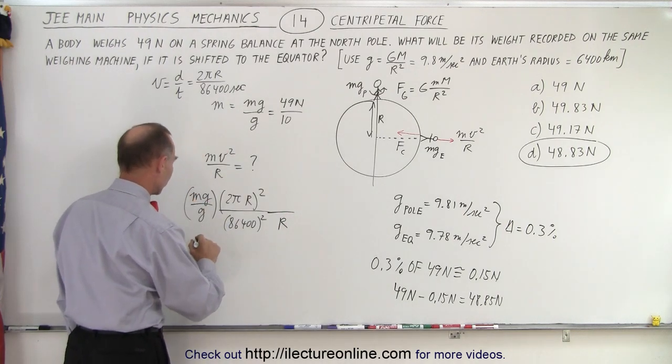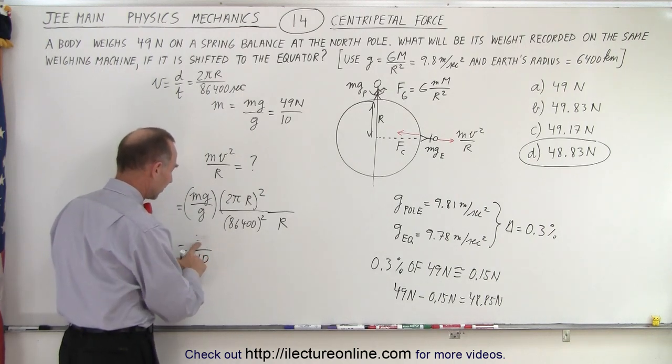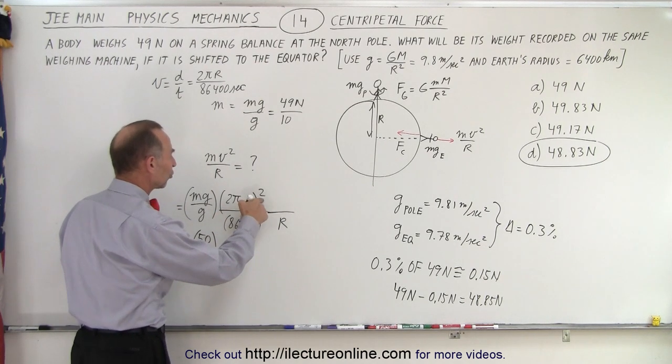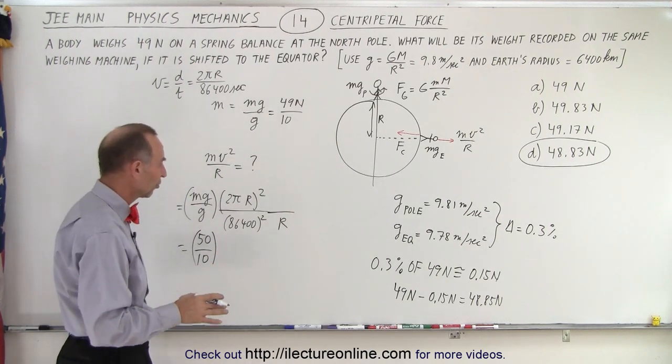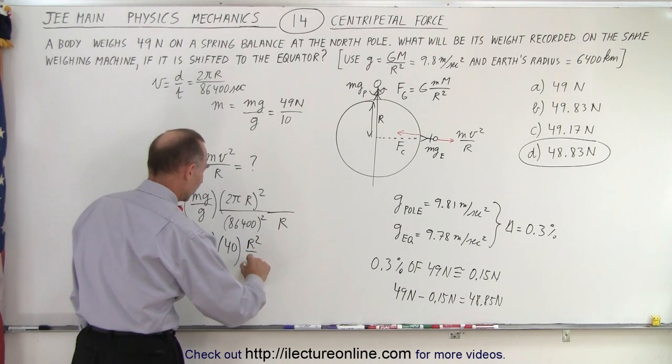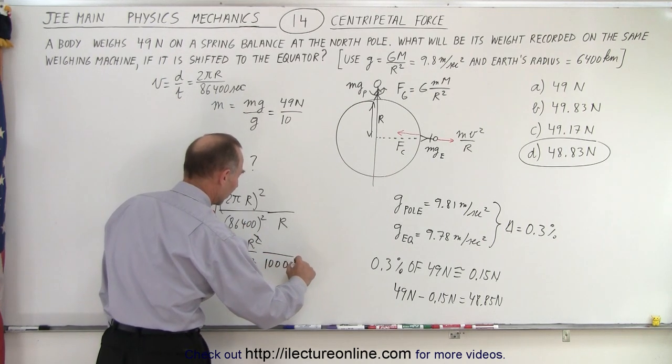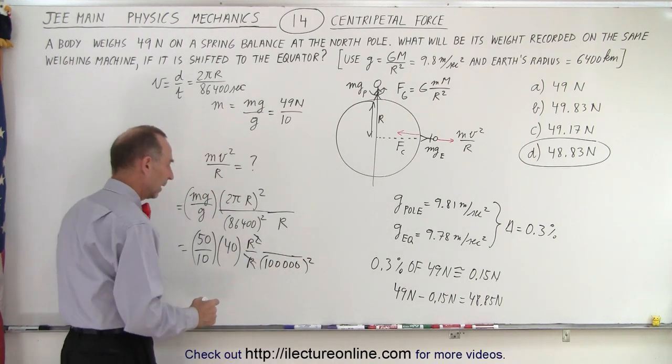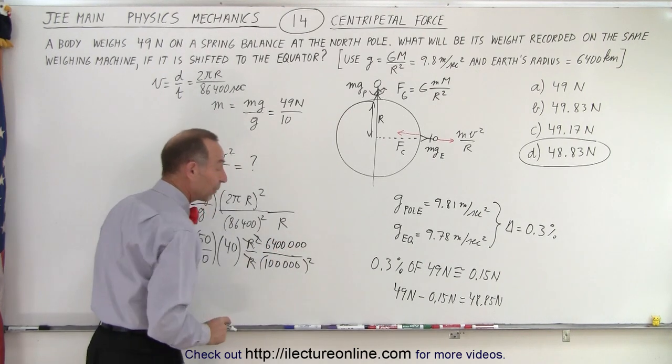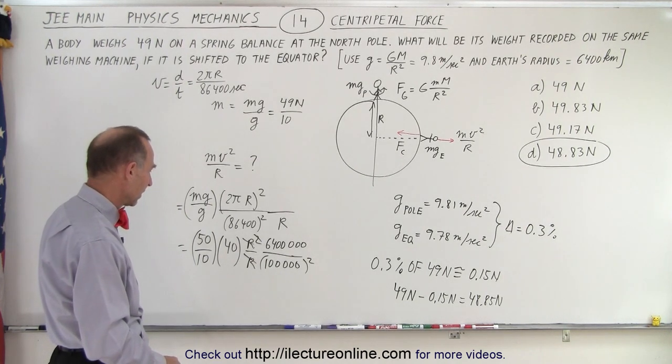So we end up with mg over g. So this would be equal to 49 divided by 10. Let's call it 50 divided by 10 to make it easy. So 50 divided by 10. Then we get 2π squared. Now 2π is about 6. Square that, you get 36, make it 40. So 40. And then we have r squared over r. So that simplifies like that. And then 86,400 is about 100,000. And we want to square that. And instead of r, we can write 6,400 with three more zeros, because we have to convert that to meters.